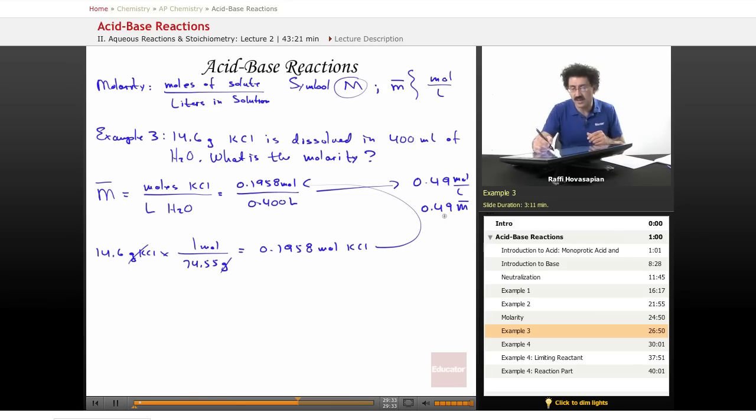And this 0.49 tells me that in one liter of solution, I have 0.49 moles of KCl floating around. Now, KCl floating around—potassium chloride is made of one atom of potassium, one atom of chloride. So I have one mole of potassium floating around and one mole of chloride floating around.